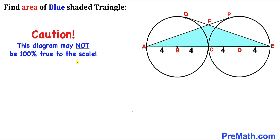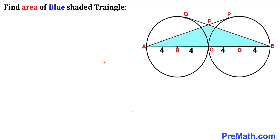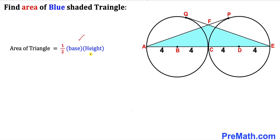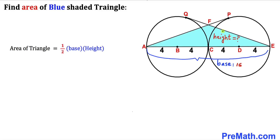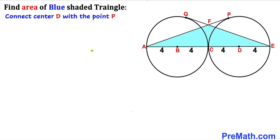Note that this figure may not be 100% true to scale. Let's get started — in this problem we are going to calculate the area of the blue shaded triangle AEF. Let's recall the area of a triangle formula: Area equals one-half times base times height. We know the base of this triangle is 16 units, so we must calculate the height of this blue triangle.